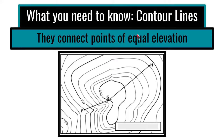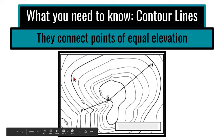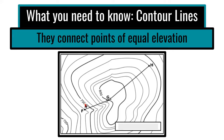Contour lines connect points of equal elevation — we have points F, G, and H here. Notice these darker contour lines; we call these index contour lines. Index contour lines will always have a number by them. Just like an index gives you information, this dark contour line on a topo map is the index one and will always give you an elevation so you know where you're starting.